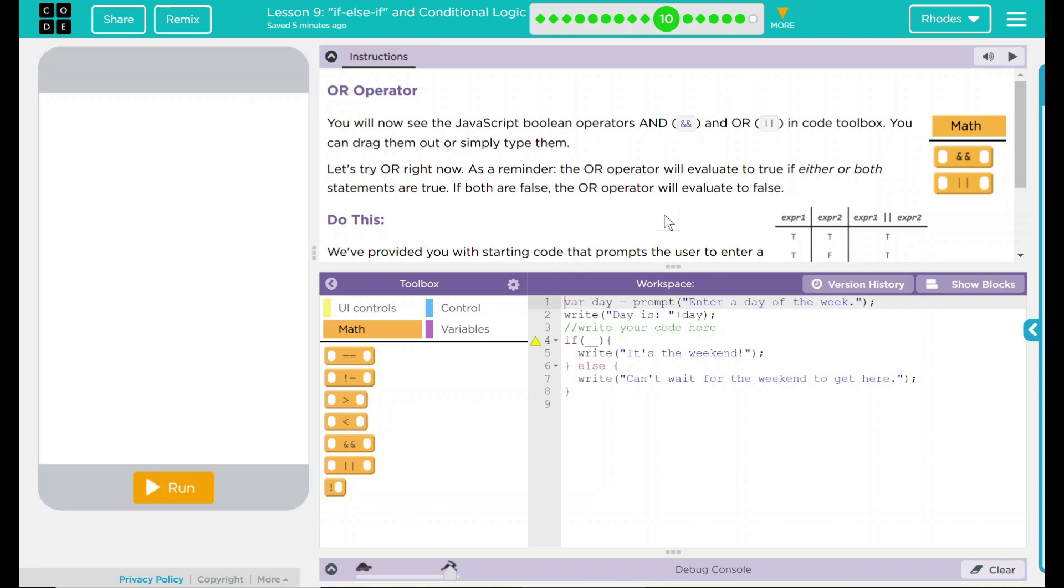You will now see the JavaScript Boolean operators AND, which is two ANDs, and OR, two lines right there, in code toolbox. You can drag them out or simply type them. Let's try OR right now.